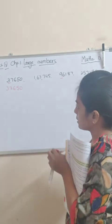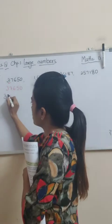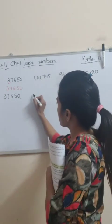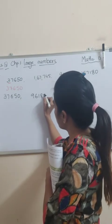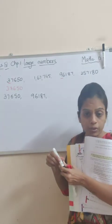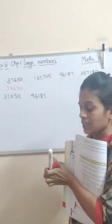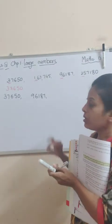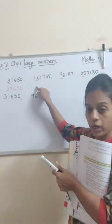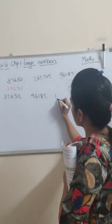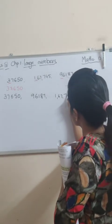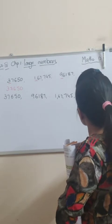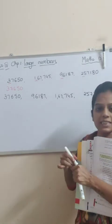Next we will write the other 5-digit number. Students, I think it is not visible — let me use the black pen. 37650 pehle lehenge. Then 89617 — actually the 5-digit numbers are done. Now coming to 6-digit numbers: here is 1, here is 2 — which is bigger? This one. Which is smaller? 1. So pehle smaller waala lehenge. It is 167745. Then 257180. This is your ascending order.